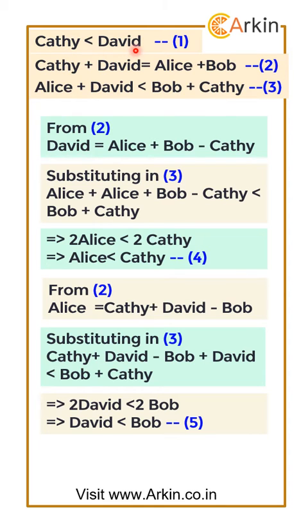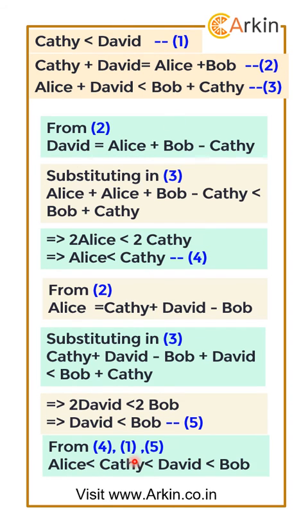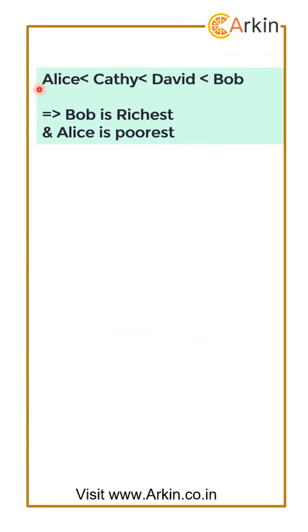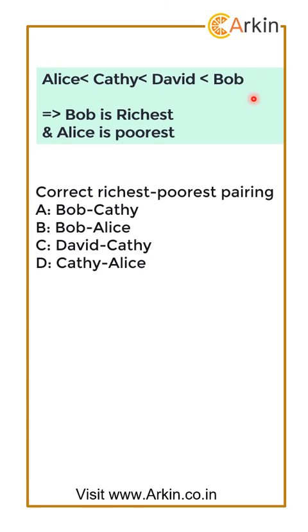From equation 1, Kathy has less money than David; from equation 5, David has less money than Bob; and from equation 4, Alice has less money than Kathy. Combining equations 4, 1, and 5, we get: Alice is less than Kathy, Kathy is less than David, and David is less than Bob. Therefore, Alice is the poorest and Bob is the richest, so the correct answer is B.